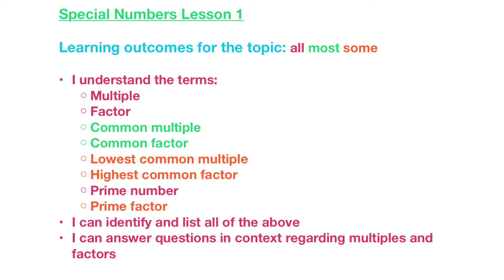So the ones in pink-red colour are the ones that everybody's going to be able to do by the end of the topic. The ones in green are what most of you will be able to do, and the ones in orange are the ones that only some of you will be able to do. So we've got plenty of time and plenty of support there for you.